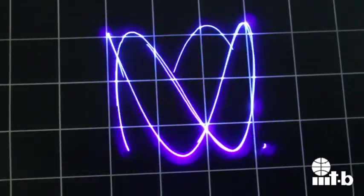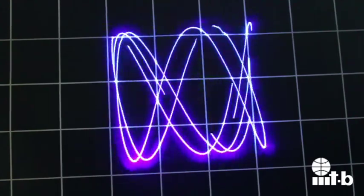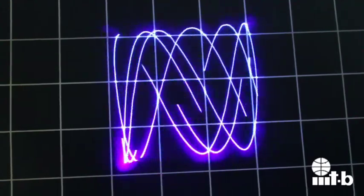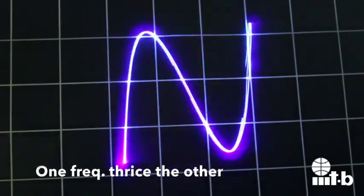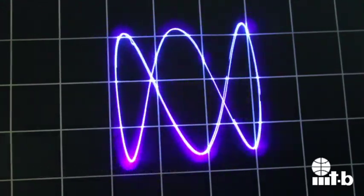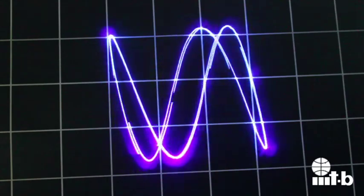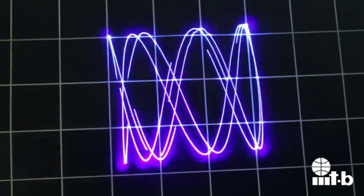When it is nearly an integral multiple, it forms structures which appear as if it is a three-dimensional model rotating in space. Also the number of peaks show how the frequencies of both inputs are related. Three lobes mean that one frequency is thrice the other. These patterns are known as Lissajous patterns.